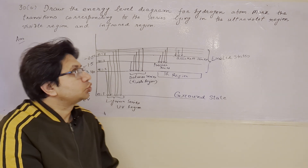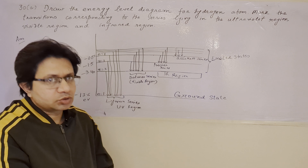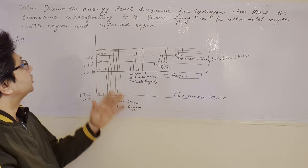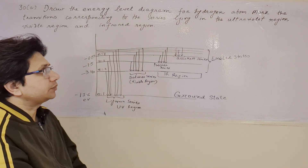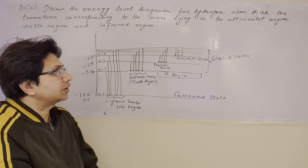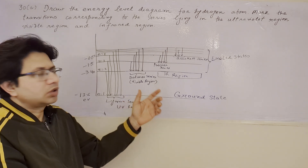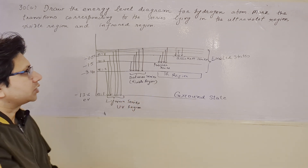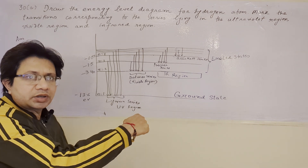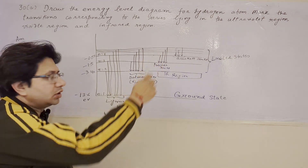So we have to show these particular regions and levels in the diagram to answer this problem. Here we have an energy level diagram for the hydrogen atom. We show the transition regions corresponding to the ultraviolet, visible, and IR regions. The diagram includes the n equals to 1 level, 2 level, 3 level, and so on.